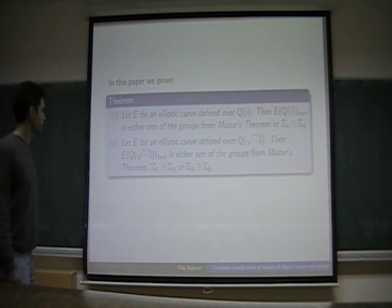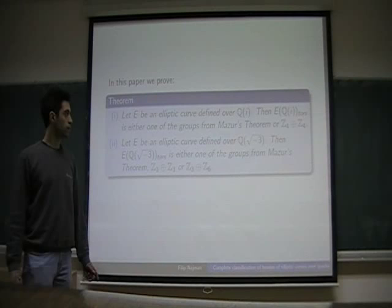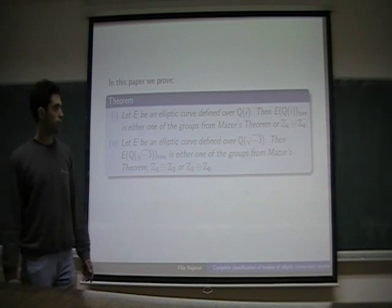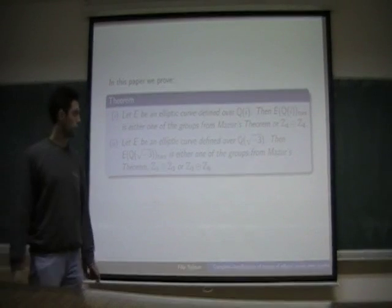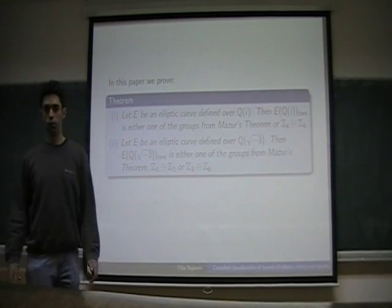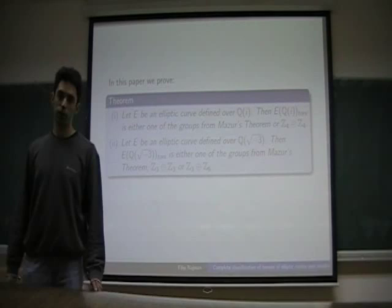We prove that if E is an elliptic curve over Q(i), then the torsion subgroup E(Q(i))_tors is either one of the groups from Mazur's theorem or Z/4Z plus Z/4Z.